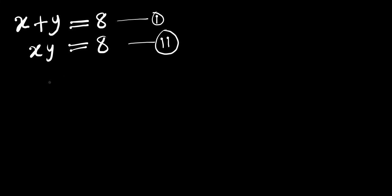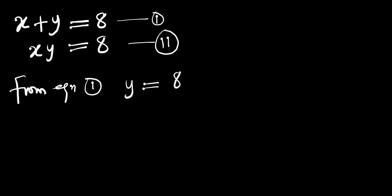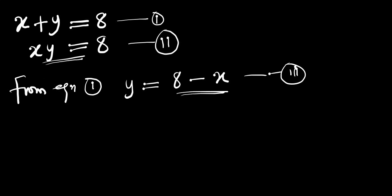From equation 1, we can have it that y equals 8 minus x. Let this be our equation 3. So we are going to substitute this for y in the second equation. That means we are going to have x into 8 minus x, and this equals 8.